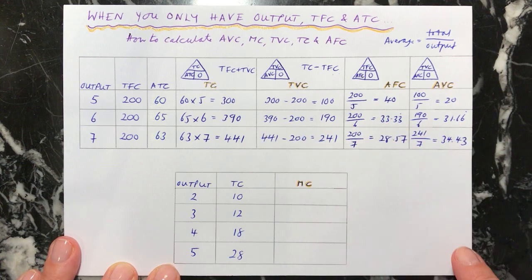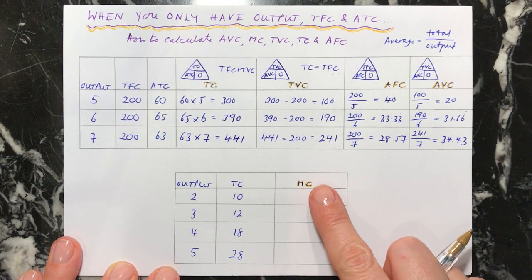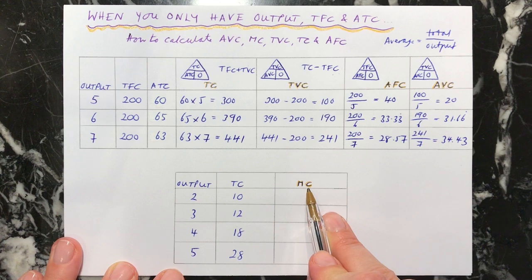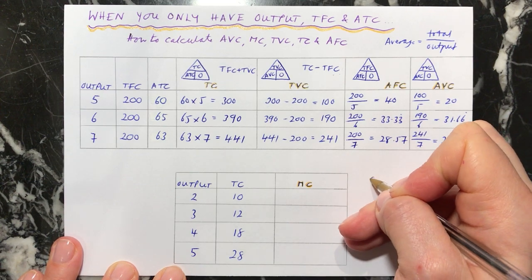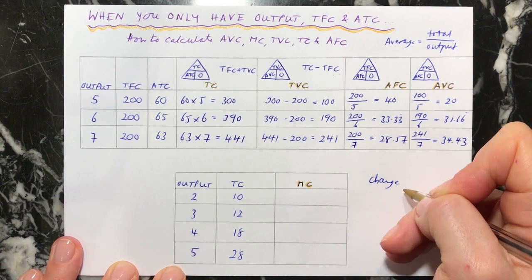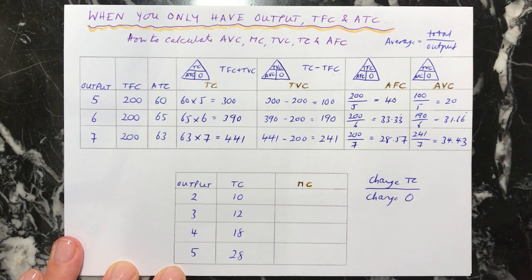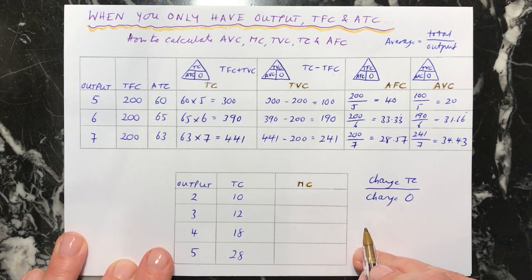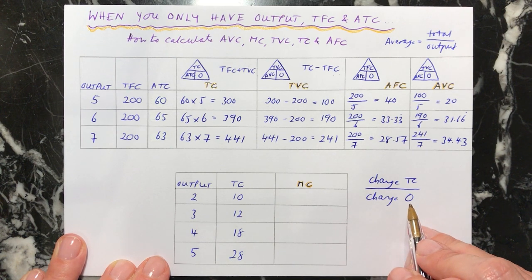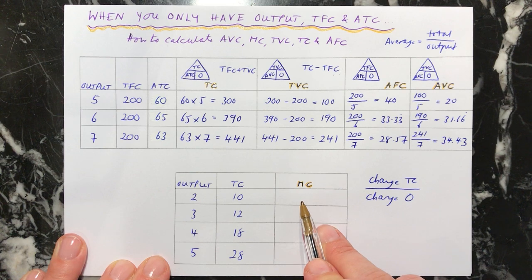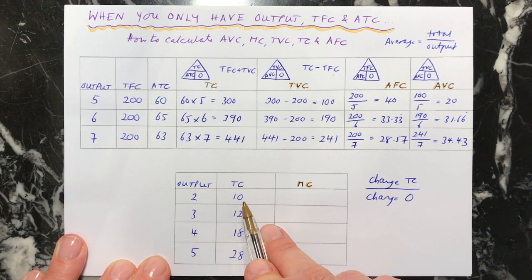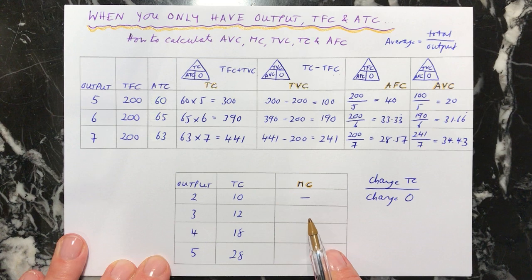So that's how to work out those four costs. Now I'm going to use some different numbers to show you how to work out the marginal cost. The marginal cost is the additional cost of making an extra amount of units. The formula for marginal cost is the change in total cost divided by the change in output. Be careful — this is just the change, not a percentage change, just a simple change. For the first row, we can't work it out because we don't know what the total costs used to be.